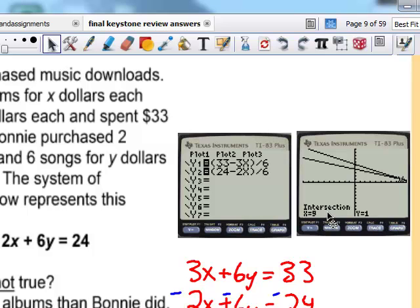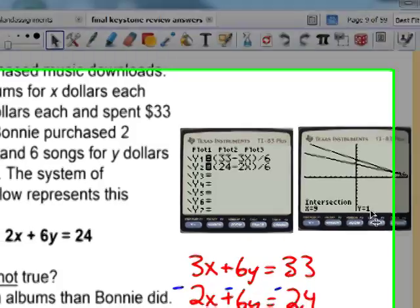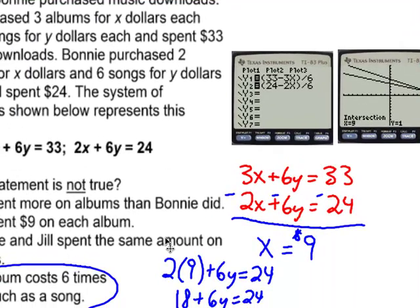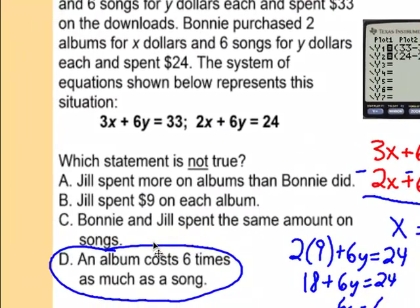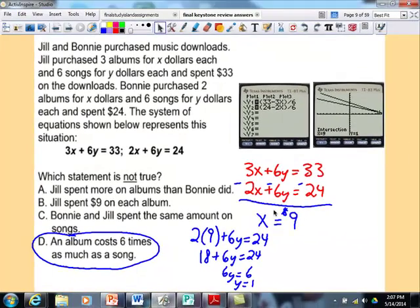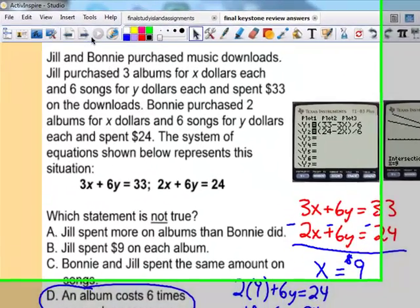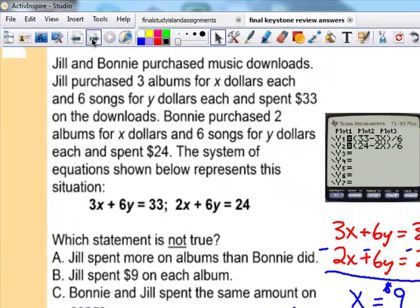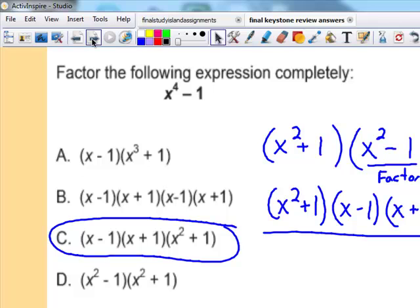Option 5 is for intersect, and you hit enter three times. It'll tell you the answer is (9,1). But again, it's important to know what X represents, what Y represents. Even if you have the correct answer, you still have to be able to correctly choose the correct option. In this case we want a false statement. Well, an album cost six times as much as a song? No, it doesn't. It cost nine times. Make sure you understand the answer for this particular problem.